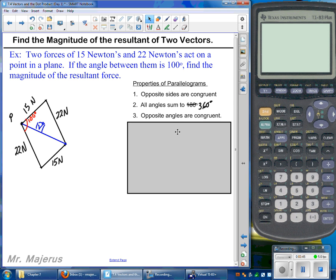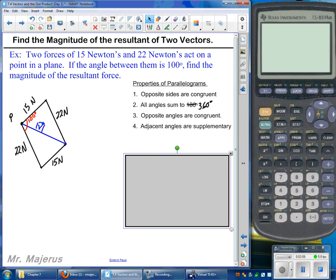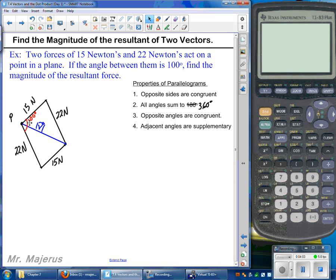Number three, opposite angles are congruent, which means this angle down here, opposite, straight across from the 22 newton force to the 15 newton force, that would also be 100 degrees. And then probably one of the other important ones here is that adjacent angles are supplementary. That's kind of the key piece of information. Because we don't know what either one of these angles is from the 15 newton to vector V or the 22 newton to vector V. We know their sum is 100, but we don't know either one of those angles. However, using this idea that adjacent angles are supplementary, meaning any two consecutive angles, we should be able to label a full angle. So using property four, we would now know that this angle, if that one's 100 and supplementary means add up to 180, this angle here needs to be 80 degrees.